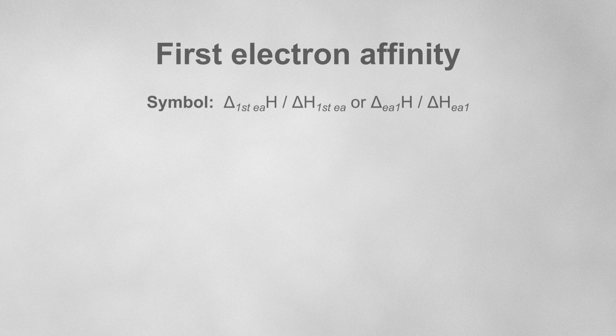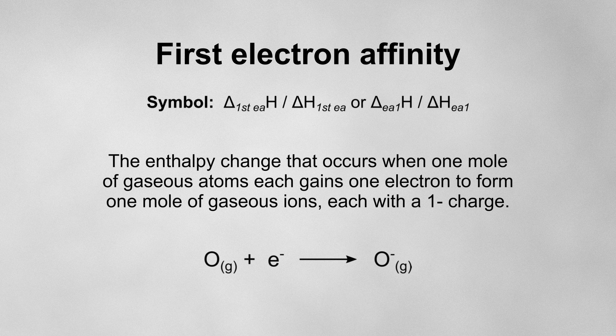The first electron affinity is the enthalpy change that occurs when one mole of gaseous atoms each gains an electron to form one mole of gaseous ions, each with a 1− charge.